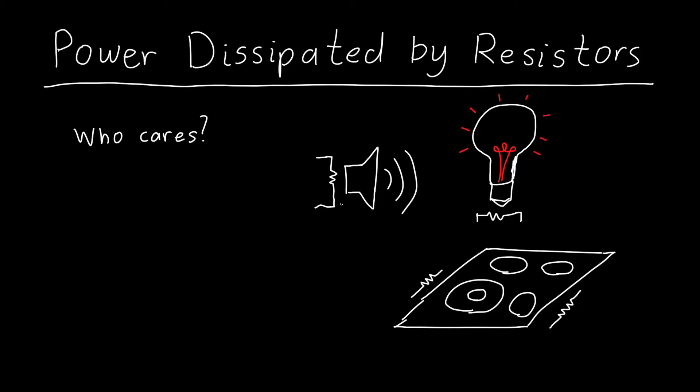Well, a resistor is a general model for a physical thing that takes electrical energy, or electrical power, and turns it into something else. So in the case of, for example, a speaker, this can be modeled as a resistor. It takes electrical energy in and converts that into acoustic energy or pressure waves.